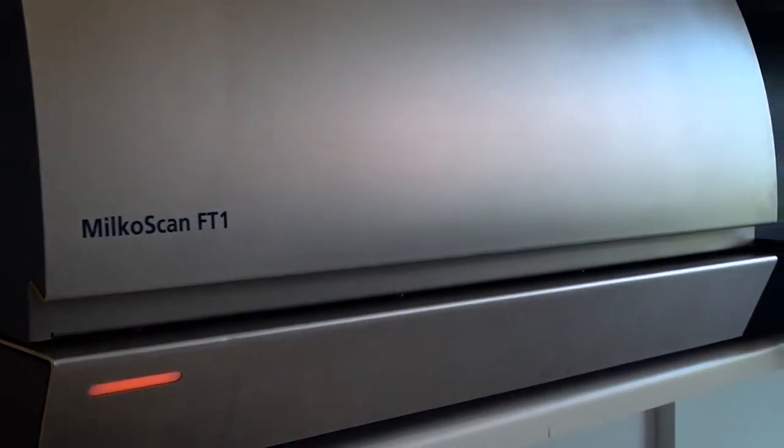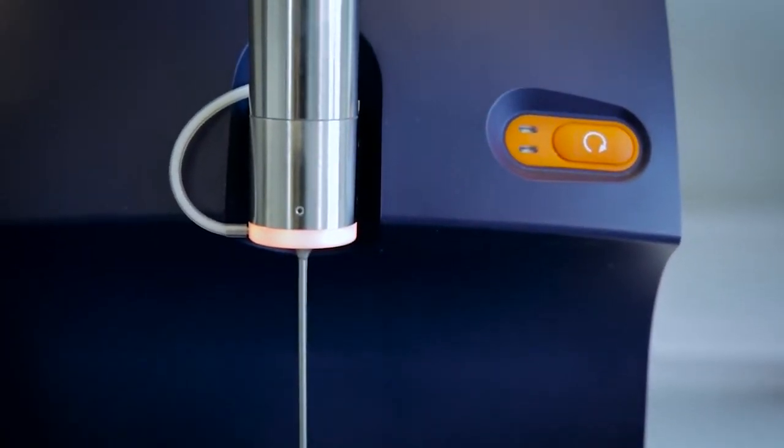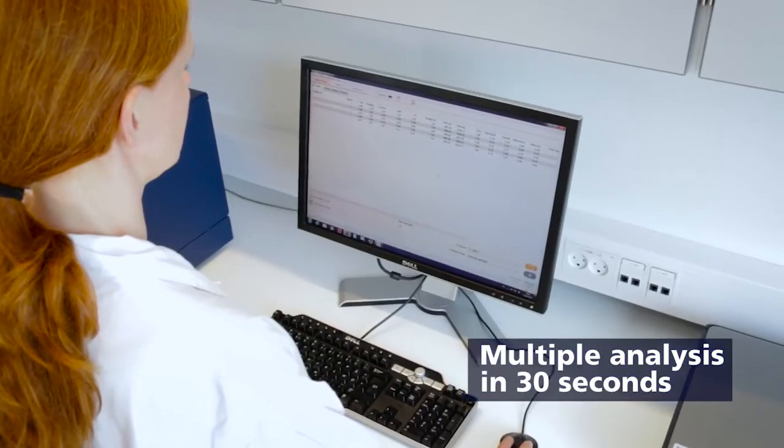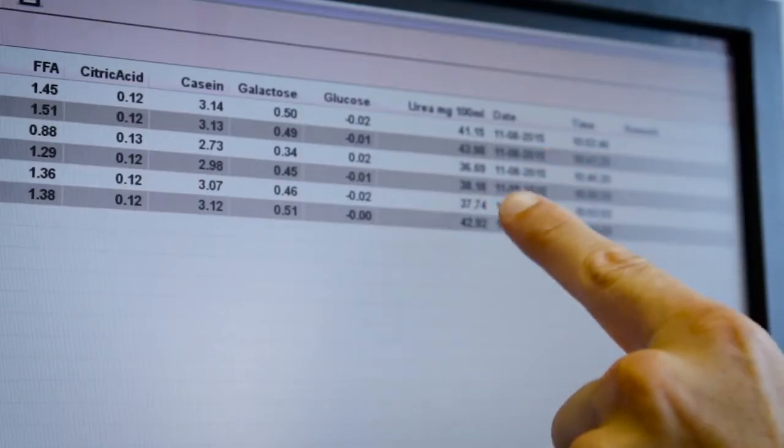Milcoscan FT1 is the gold standard in dairy analysis, using FTIR technology to analyze 14 milk components simultaneously, including screening for adulterants in 30 seconds. This enables you to make fast adjustments in your production.